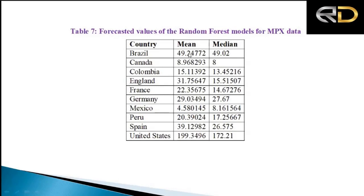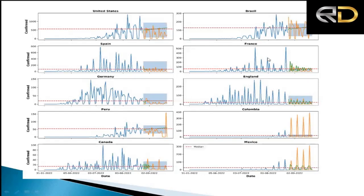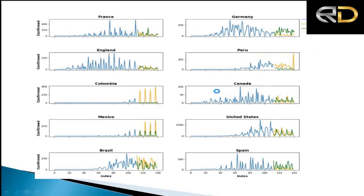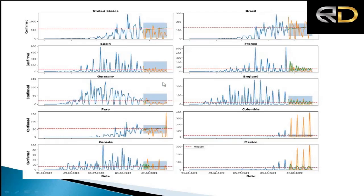For the Random Forest forecasts, mean and median values are shown. For some countries the data is slightly skewed — for example, for England the mean is 31 while the median is 15. Comparing prediction graphs from ARIMA (time series) and Random Forest (machine learning), we can observe the prediction patterns and, on the basis of these analyses, formulate the best and most robust policies to check the further spread of monkeypox virus cases.